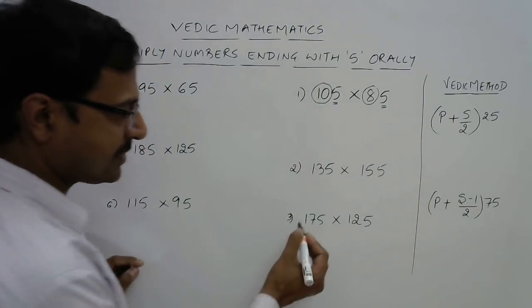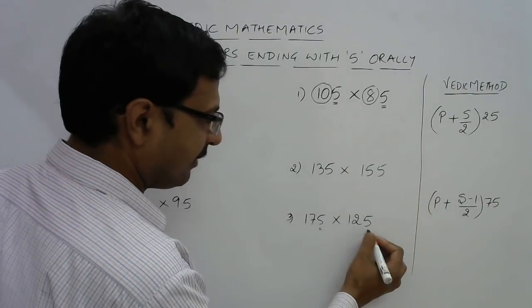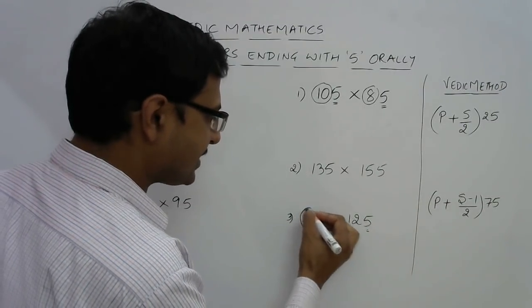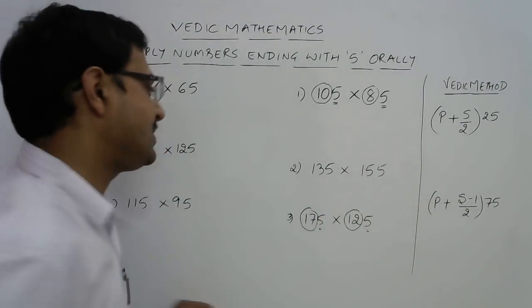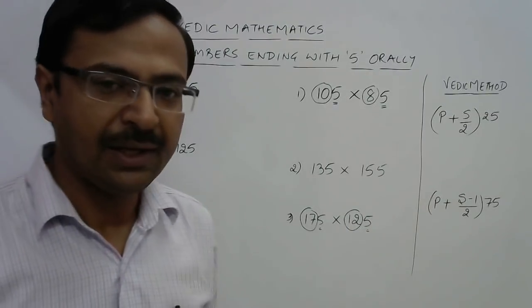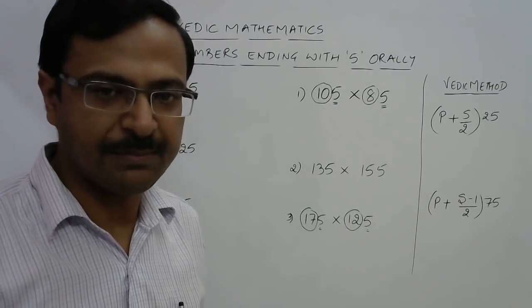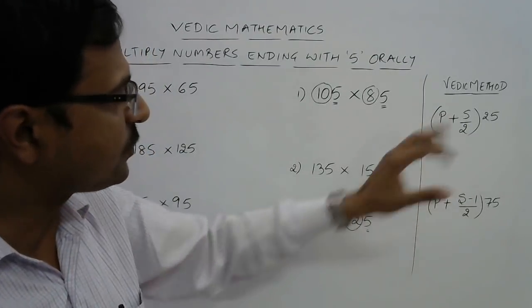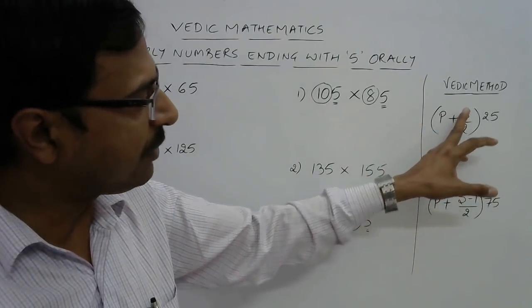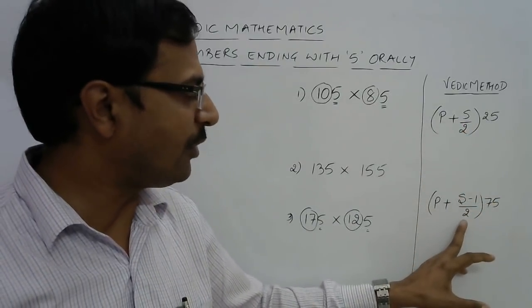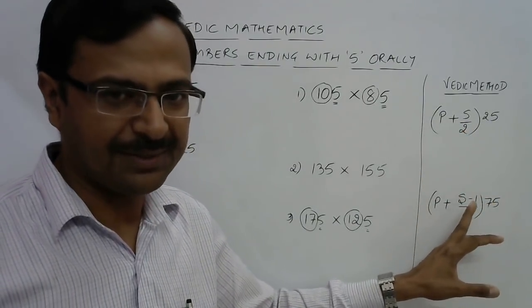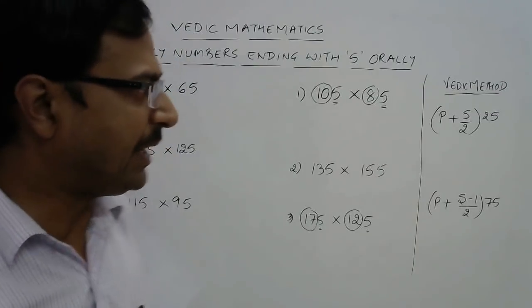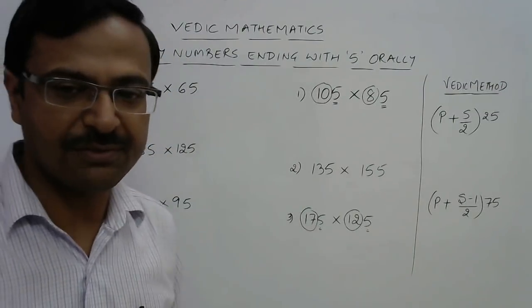In case of odd sum, like 17 and 12, which gives 29, we make a small correction in the formula. Instead of using half of s, we use half of s minus 1. Let's see how we can apply this method and get to our answer very easily using the same approach for these higher numbers.